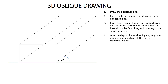Now let's check the next step — it says give the depth of your drawing any length in millimeters and mark such on the newly constructed lines. Let's take 20 millimeters for this exercise. For now let's just mark the lines on the right hand side of your drawing. You need to mark 20 millimeters on all the lines, but for now let's just mark these two — marking the first 20 millimeters on the top line and on the bottom line.